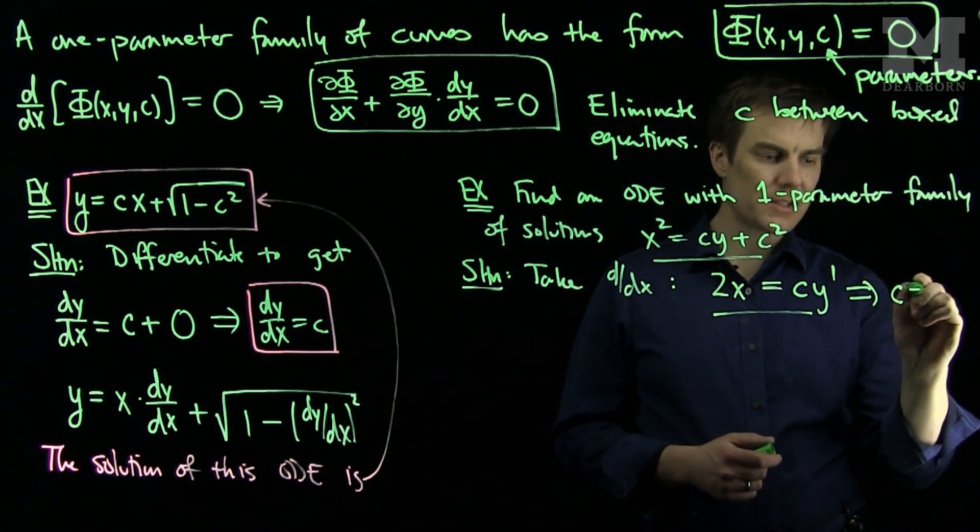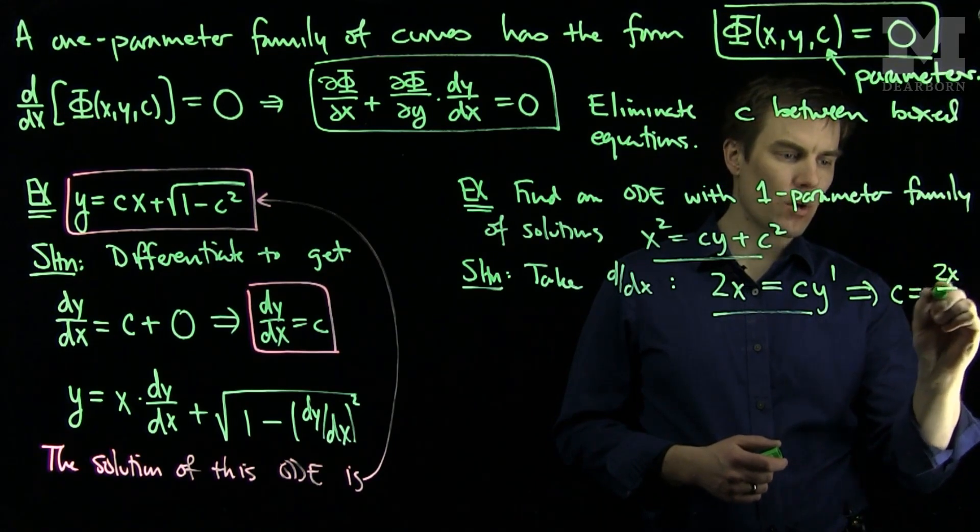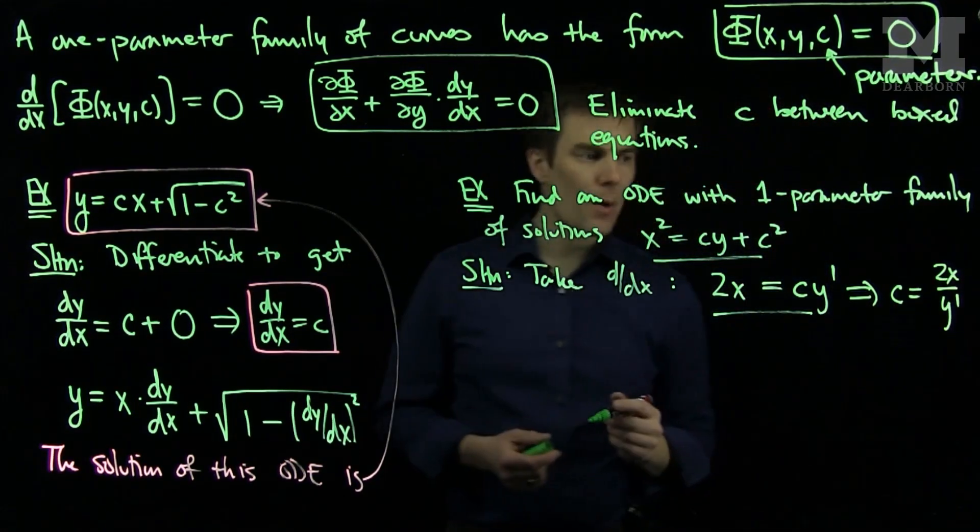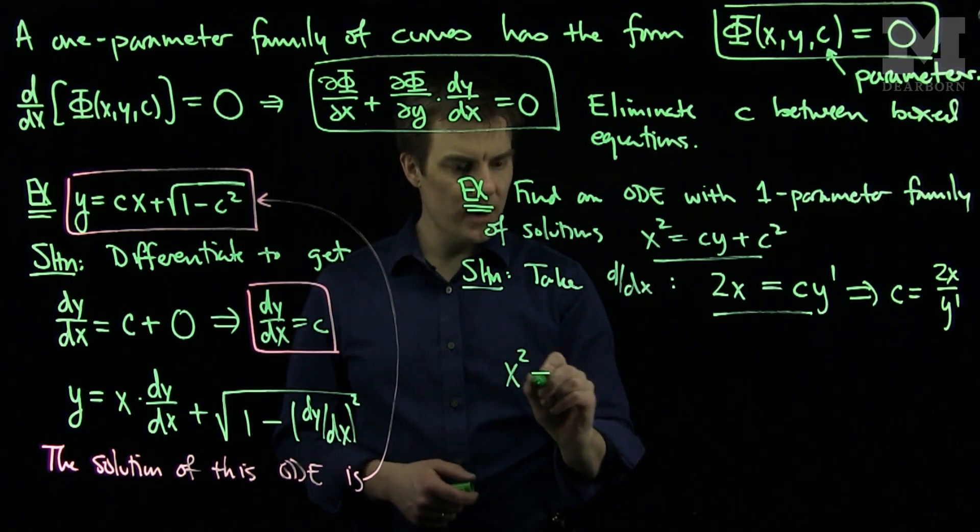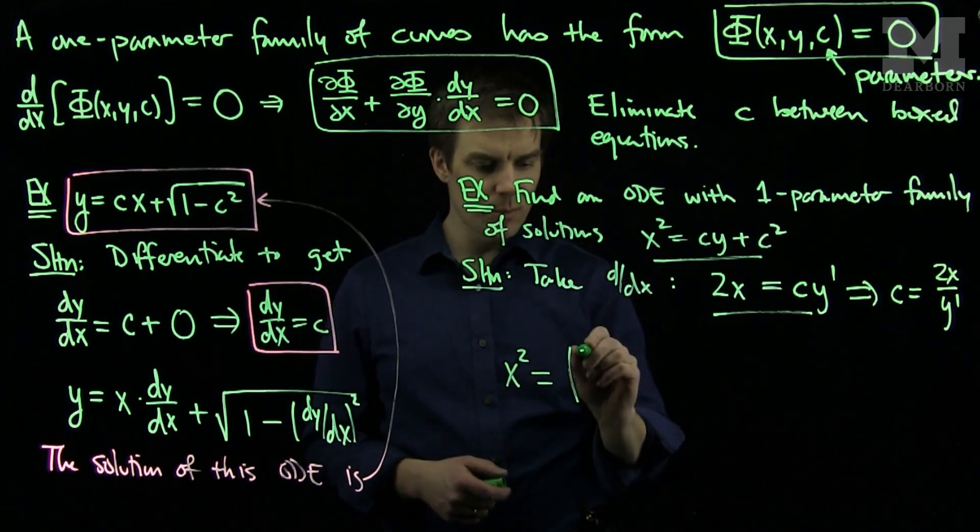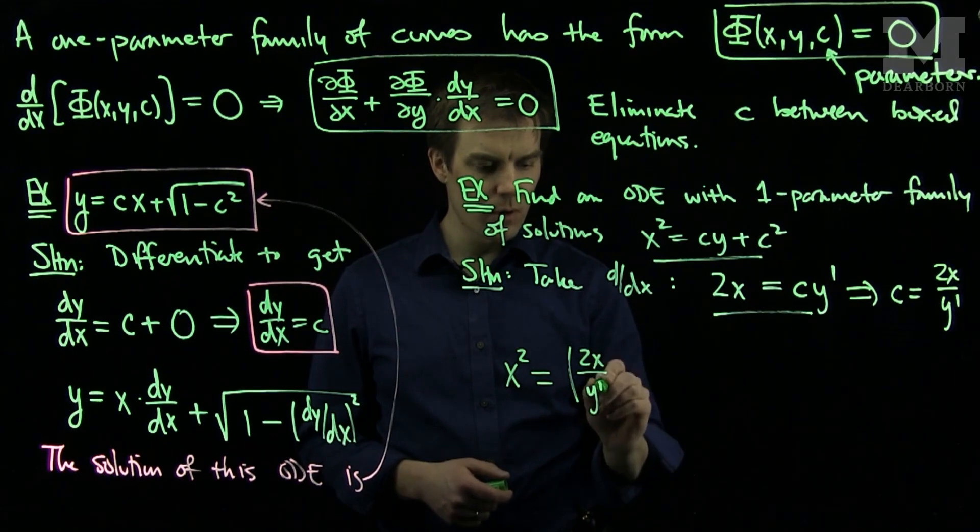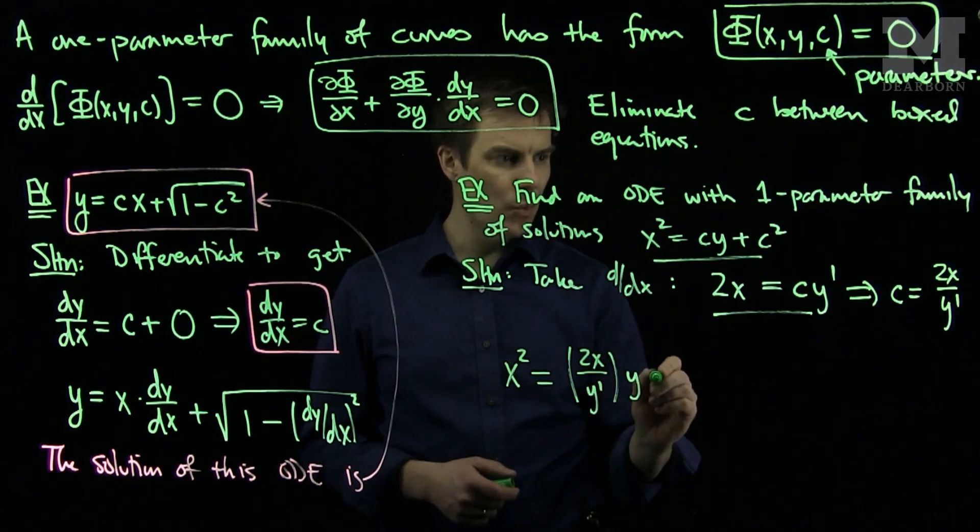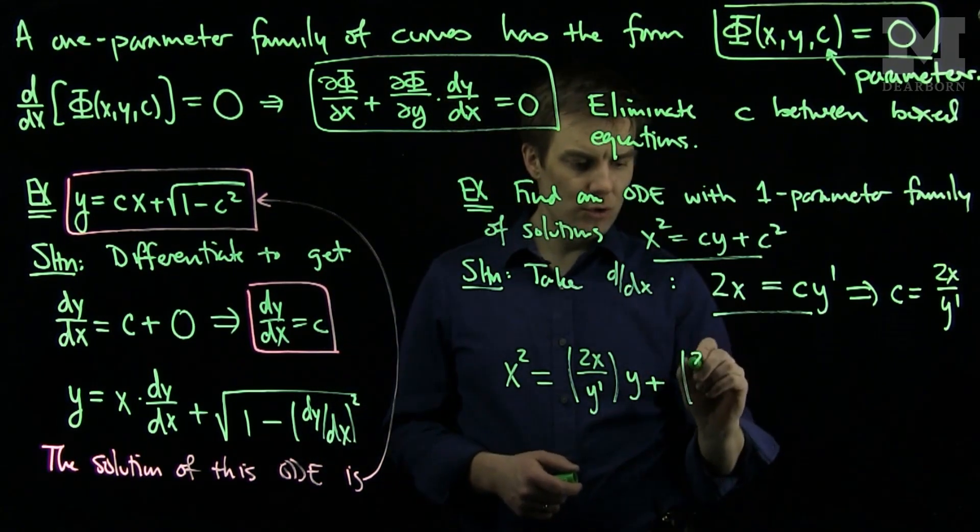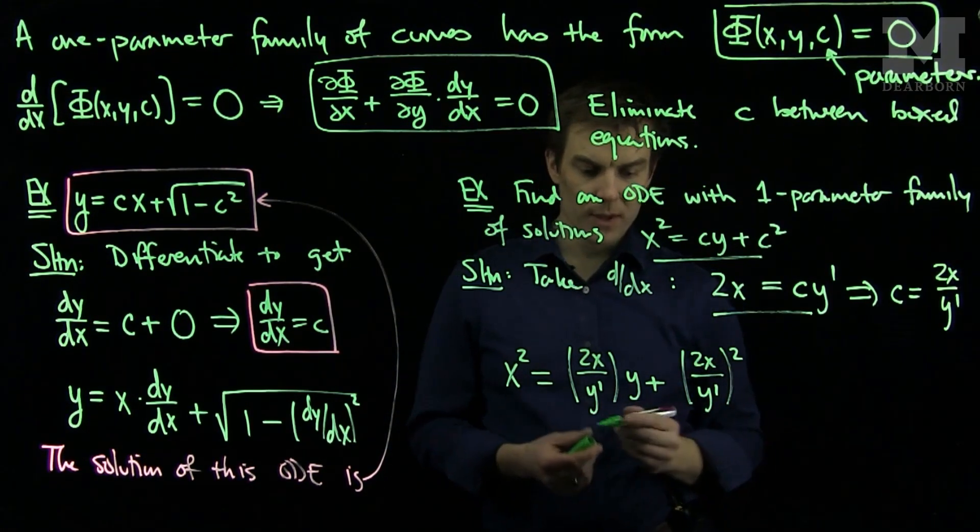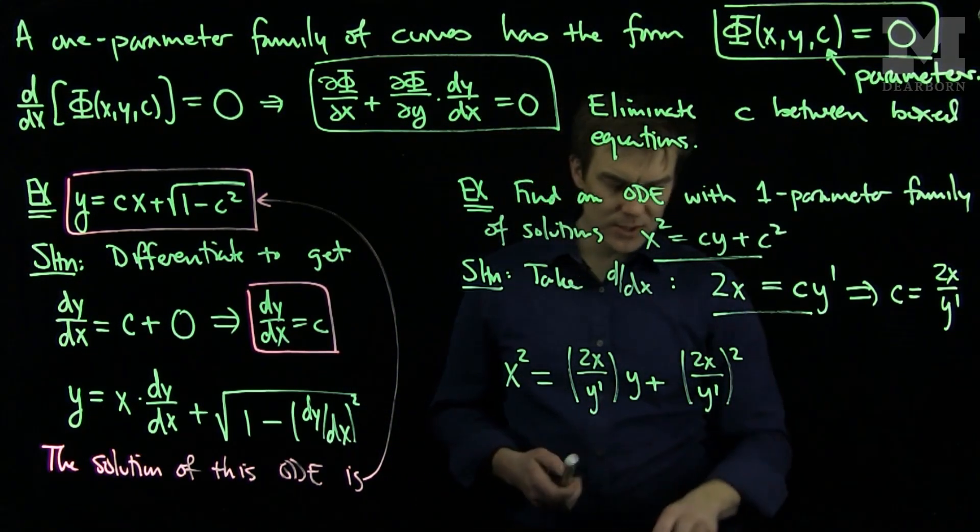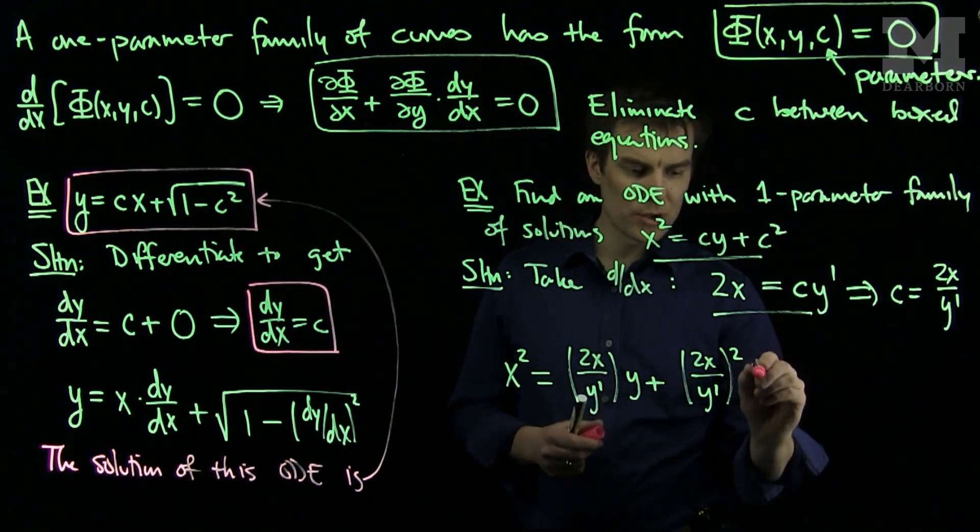The second equation tells me that c = 2x/y'. Now we can plug in and update. So our equation is x² = c·y, which we know to be (2x/y')·y + (2x/y')².